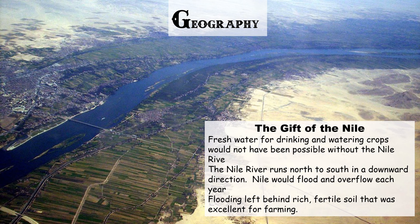You cannot look at Egypt without knowing about the Nile River, which has been called the gift of the Nile for the Egyptian people because it is their lifeblood. All four early river civilizations began around rivers, because the river gives people water to drink as well as to water their crops. Specifically, once a year around July, the Nile would overflow and flood, and when the waters receded it left behind very fertile soil. So the Egyptian people were gifted not just with water but with great soil for farming.